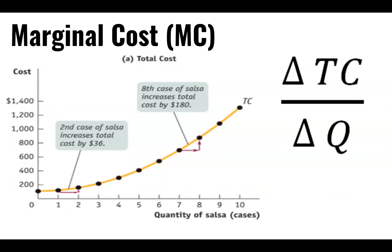Marginal cost is the change in total cost over the change in output or change in quantity. This measures how much our costs are increasing as I produce one more unit of the good. Like all things marginal, it's about change. Look at the total cost when I produced one item, then the total cost when I produced two items, subtract the two — that gives me the change in total cost divided by the change in quantity, which tells me the marginal cost.